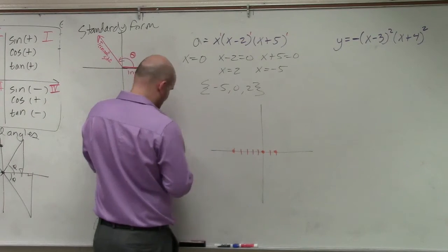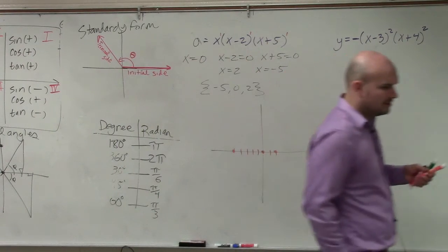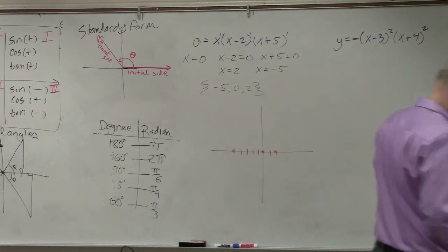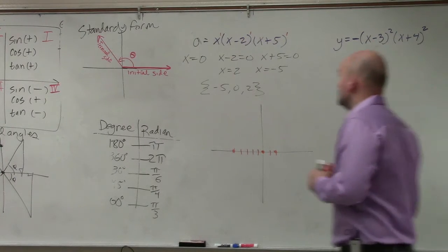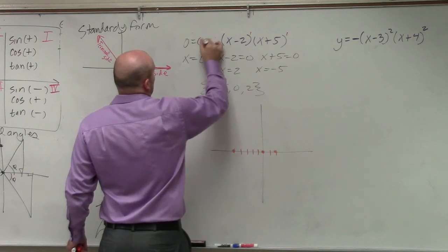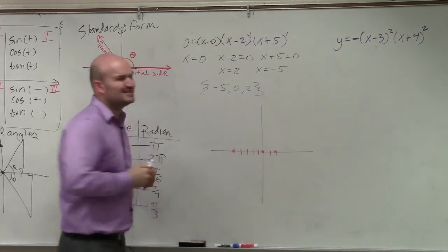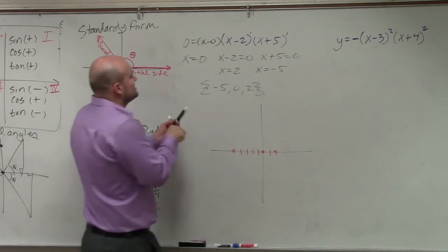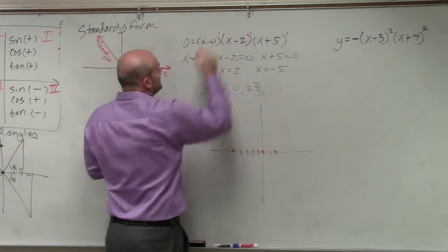Now, we might want to write this as, I guess I lost my marker for that. Well, you might want to write this as 0 equals x minus 0 instead of just x. But again, you would still see that the power of that is still a 1.